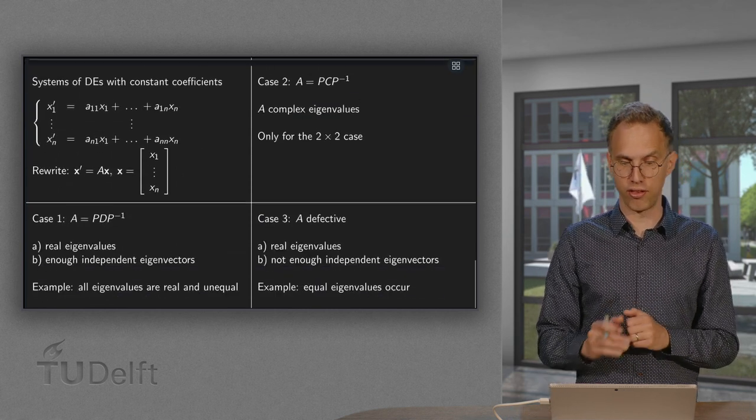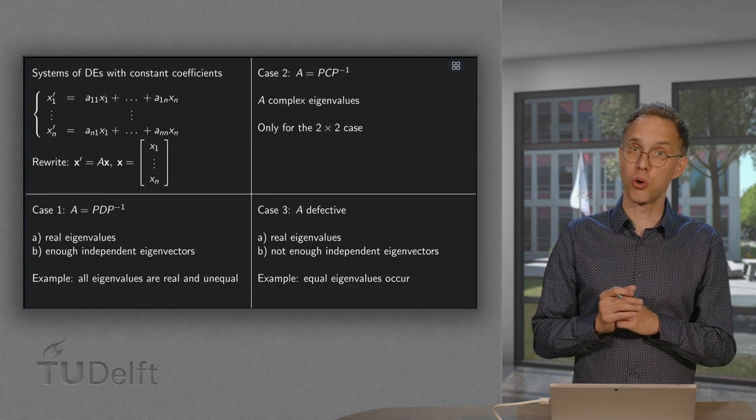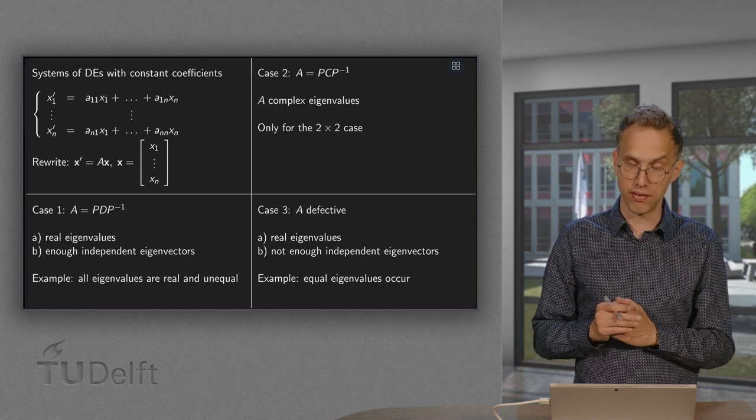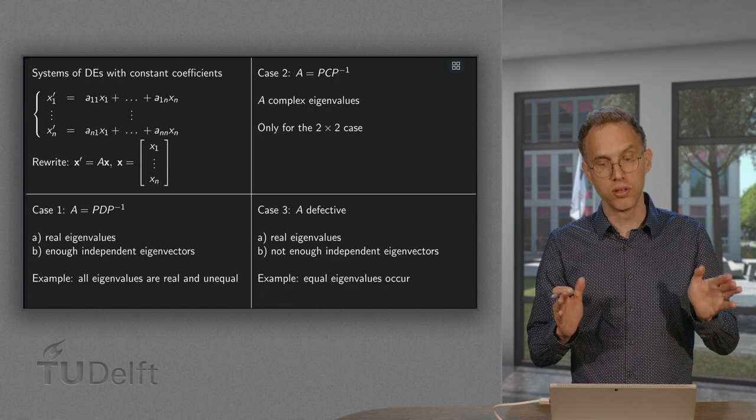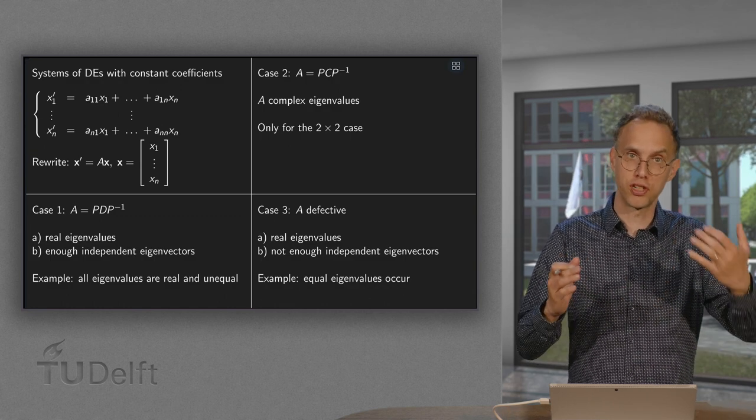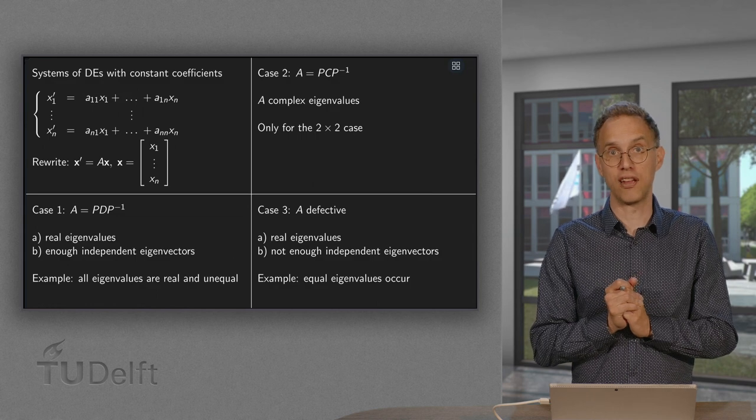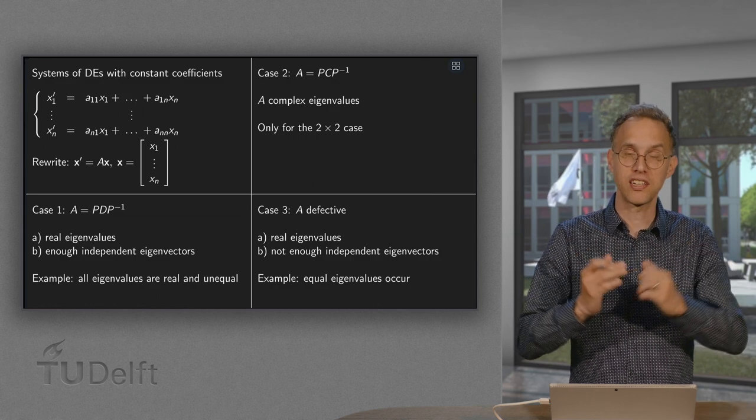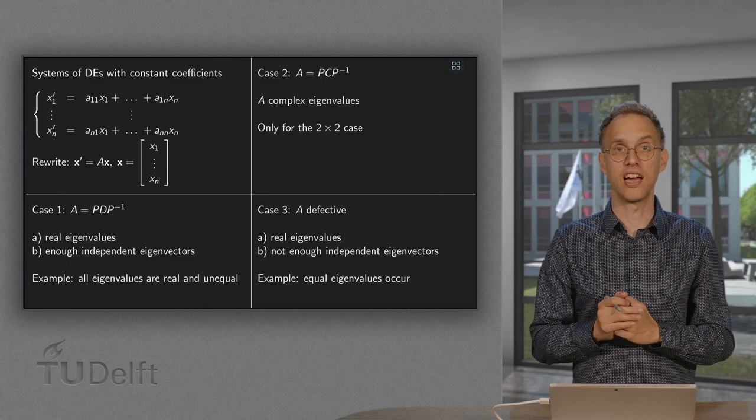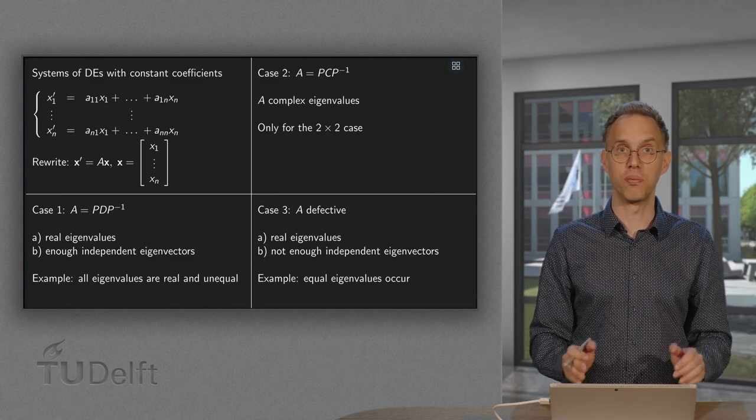And then the third case, if A is what's called defective. So what does that mean? That you have real eigenvalues, but not enough independent eigenvectors. So this is for example the case when equal eigenvalues occur. So for that case, for a defective A, you will have to go to generalized eigenvectors and use the Jordan canonical form for example.